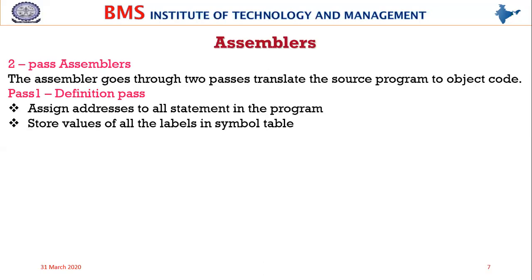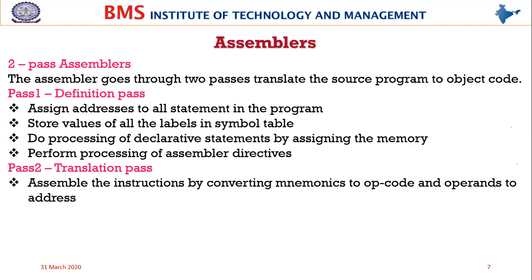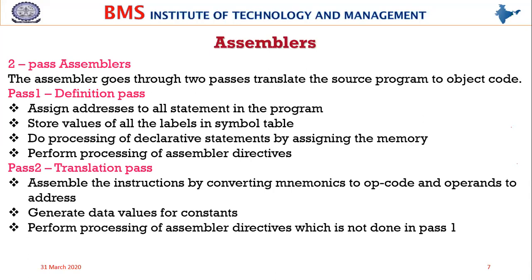There are two passes of the assembler. Pass 1 is called the definition pass, wherein addresses are assigned to all statements in the program — including declarative statements and assembler directives like start and end. Pass 1 doesn't do any conversion or translation. Pass 2 is called the translation pass, wherein all imperative statements are converted into opcodes.